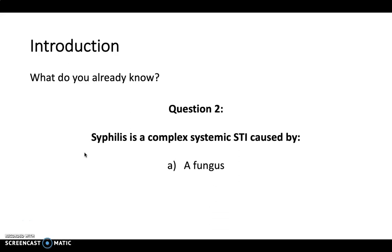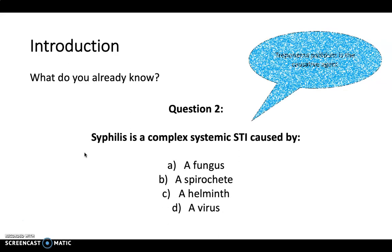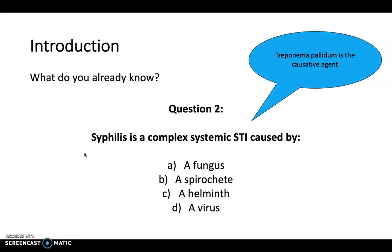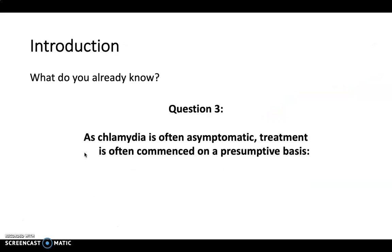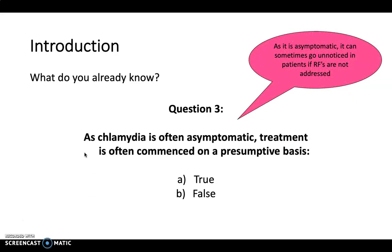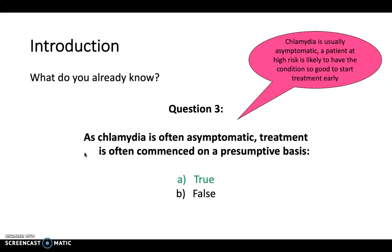Question 2: syphilis is a complex systemic STI caused by what — a fungus, a spirochete, a helminth, or a virus? The answer is a spirochete. Question 3: as chlamydia is often asymptomatic, treatment is often commenced on a presumptive basis — true or false? Indeed it's true. Chlamydia is usually asymptomatic, and a patient at high risk is likely to have the condition, so it's good to start treatment early whilst you confirm the diagnosis.